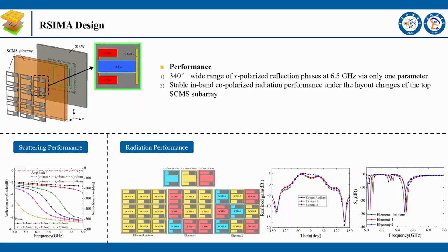Each ARCEMA is composed of a slot-connected metasurface (SCMS). When illuminated by plane waves, each SCMS unit cell on ARCEMA can independently obtain a wide range of reflection phases by only tuning the length of the L-slot. When excited by the coaxial port of the SISW feed, the arrangement changes of the SCMS subarray hardly affect the radiation performance.